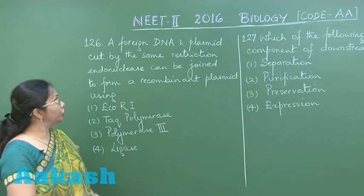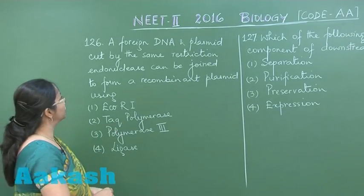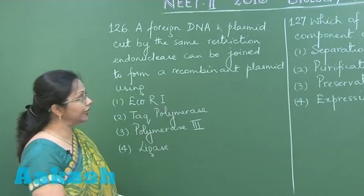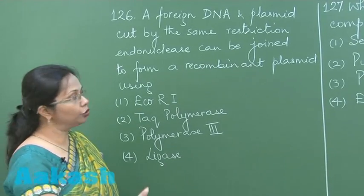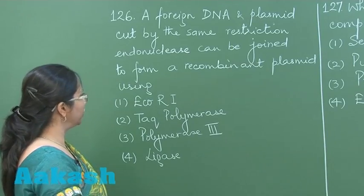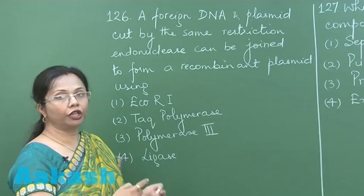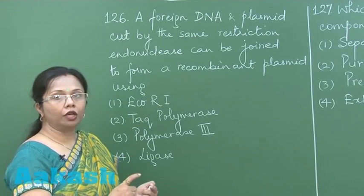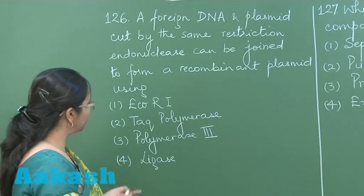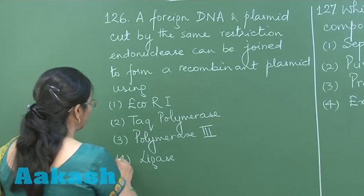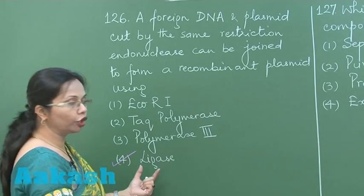In question 126, a foreign DNA and plasmid which have been cut by the same restriction endonuclease can be joined to form a recombinant plasmid. To join two different DNAs, we require the formation of phosphodiester bonds, and those bonds are catalyzed by ligases.